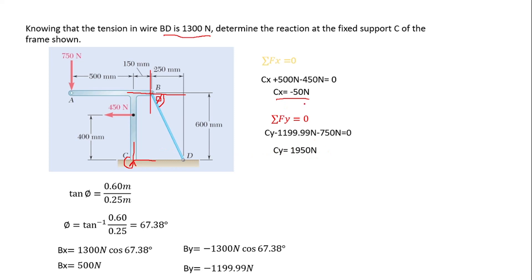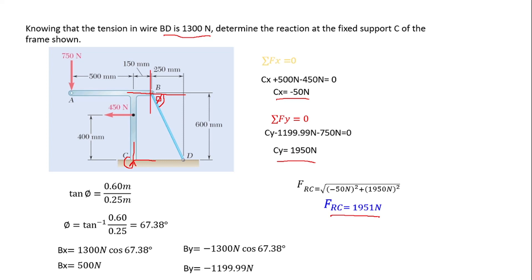Now that we know Cx = −50 N and Cy = 1950 N, we can find the resultant force. The resultant force equals the square root of (Cx² + Cy²) = √((-50)² + (1950)²), which gives us a resultant force of 1951 newtons.